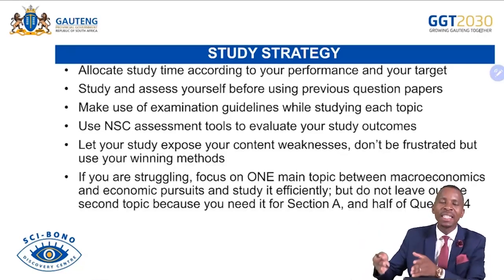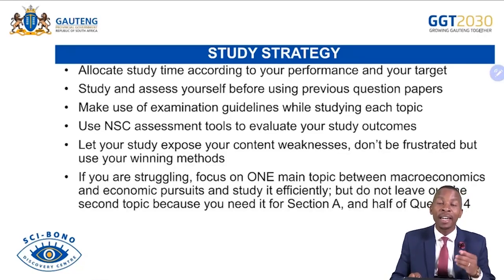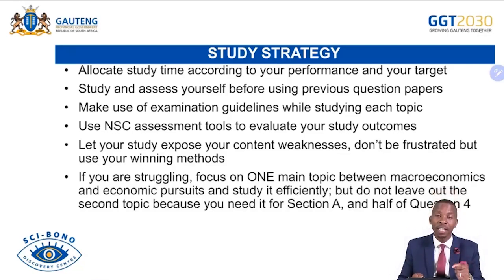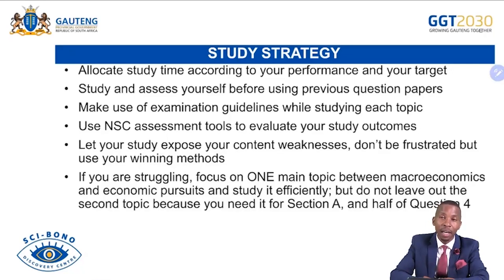Also do economic pursuits, but not as intensively if your strength is macro — that will allow you to escape level one. We don't need level ones or even level twos. Your teachers have worked hard to ensure you are ready — now it's time for you to push yourself. Have a working strategy. No question paper is difficult — it can be challenging, so you must also challenge it. Prepare each topic from lower order, mid-order, and higher order. But do not leave out the second topic, as you need it for Section A and half of Question 4.